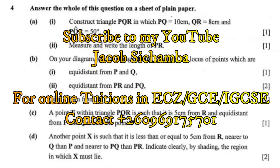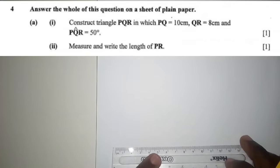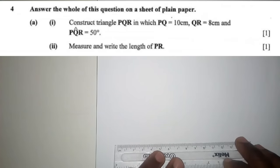Hello, welcome to my YouTube channel. For this construction, you need the pens, the ruler, the protractor, and a compass. So let's go to question A: construct triangle PQR.